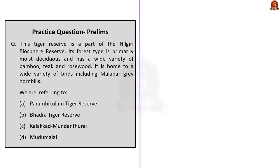First prelims question. This Tiger Reserve is a part of the Nilgiri Biosphere Reserve. Its forest type is primarily moist deciduous and has a wide variety of bamboo, teak and rosewood. It is home to a wide variety of birds including Malabar Grey Hornbills. We are referring to: A. Parambikulam Tiger Reserve, B. Bhadra Tiger Reserve, C. Kalakad-Mundanthurai, D. Mudumalai. From our discussion of the article, it is clear that the answer is option D, Mudumalai Tiger Reserve.